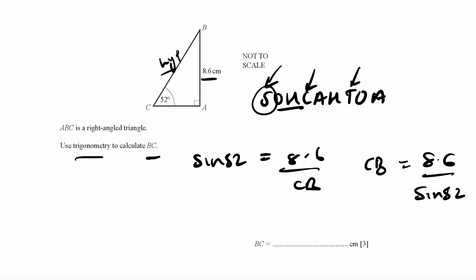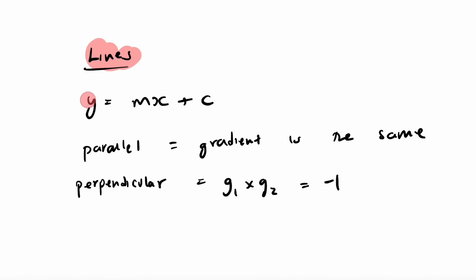For questions on lines, you need to know the format of an equation of a line where y equals mx plus c, where m is the gradient and c is the y-intercept. For lines that are parallel to each other, the gradients are always the same, so in this case the values of m are always the same. For lines that are perpendicular, what that means is if I multiply the two gradients of the lines, I will get negative 1.